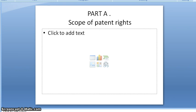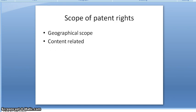Patent rights protect against unauthorized persons only within your own country if you are applying to the Indian Patent Office. The scope of patent rights has two classifications: geographical scope and content-related scope. Under geographical scope, if a patent is granted to you, you have exclusive rights to utilize the invention in that particular country, and you can transfer the rights or the license within that country.